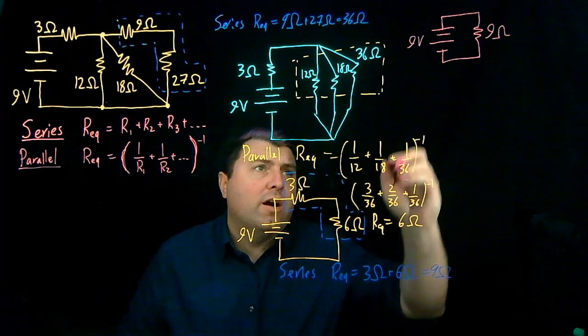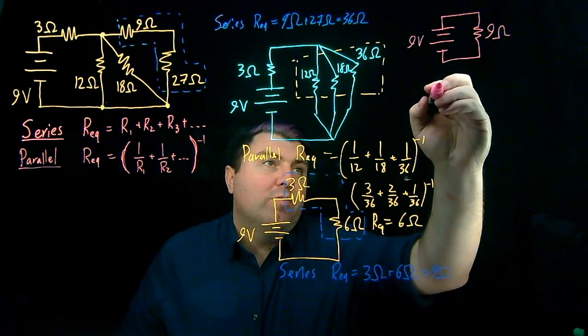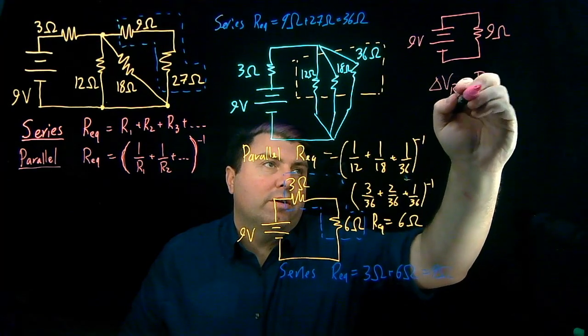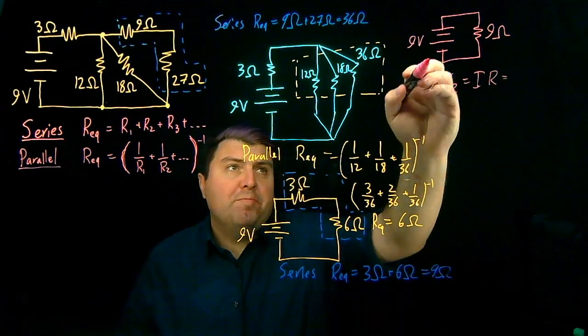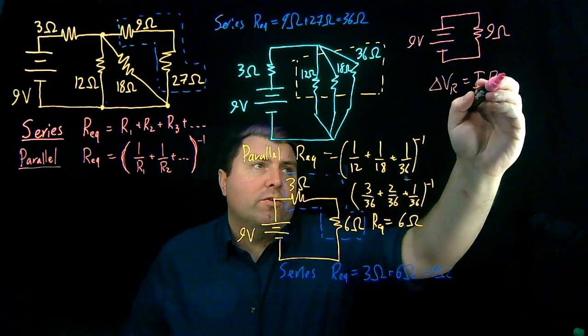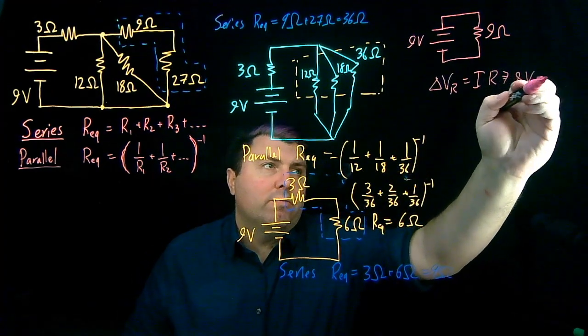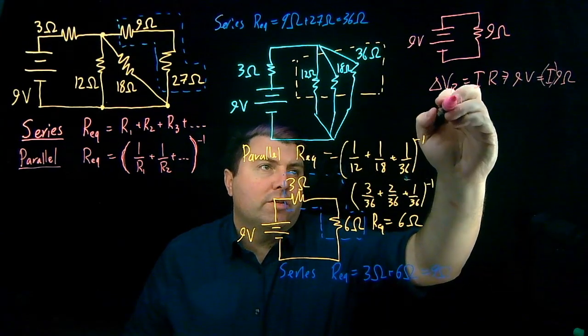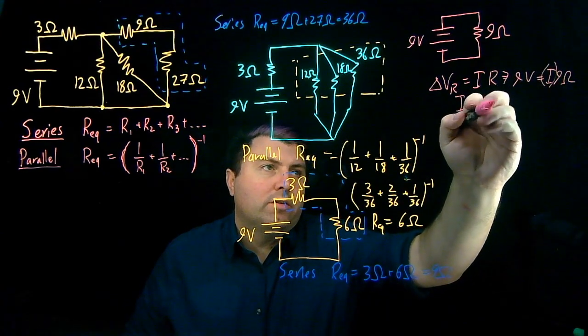So now we can use our Ohm's law and we say that delta V over the resistor is equal to the current times its resistance. Well, if I go up 9 volts, then I have to go down 9 volts. So I have 9 volts equals I times 9 ohms. And so the current is 1 amp.